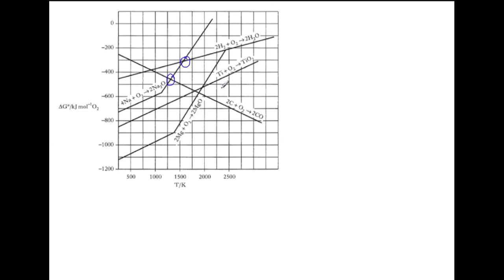If we want to extract sodium using hydrogen, however, we need to go to a higher temperature of around 1550, where the sodium line is above the hydrogen line. To extract titanium using carbon, we need to go above 1800. To extract magnesium, we need to go above 1900. However, magnesium can also be extracted using titanium, as they cross over at around 1950.